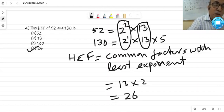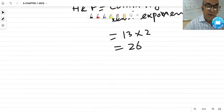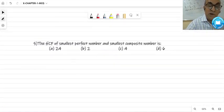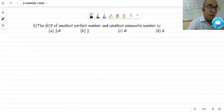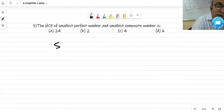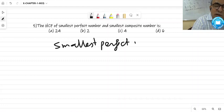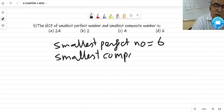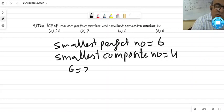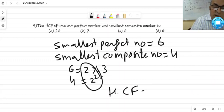Now next question, question number 5. HCF of smallest perfect number and smallest composite number. Already we discussed smallest perfect number is 6 and smallest composite number is 4. 6 equals 2 into 3 and 4 equals 2 square. This is common and least exponent is 1, so HCF will be 2.